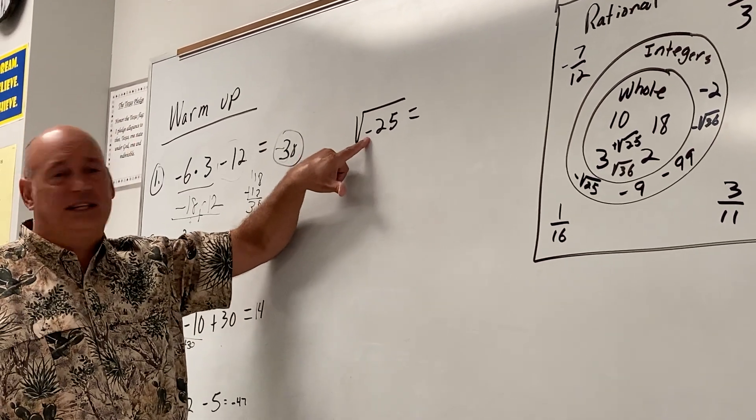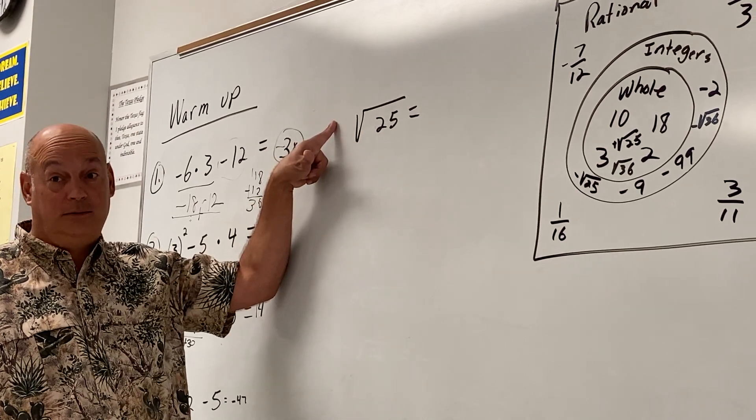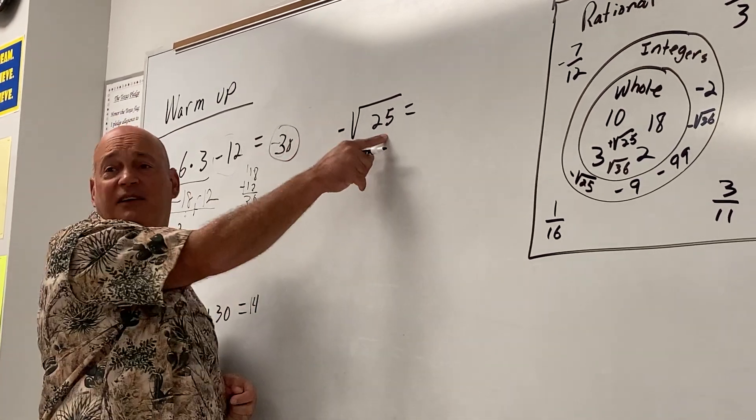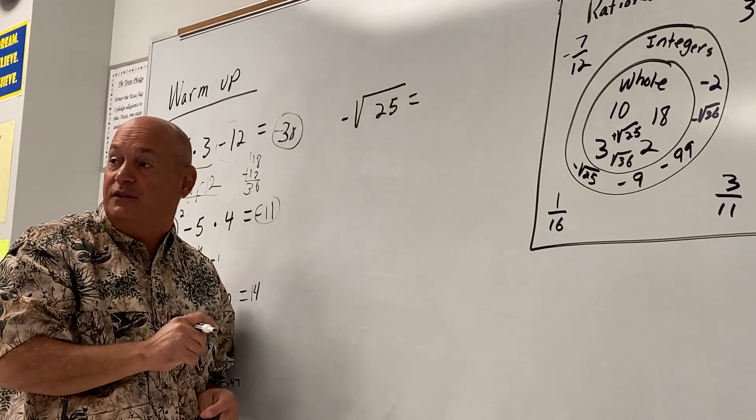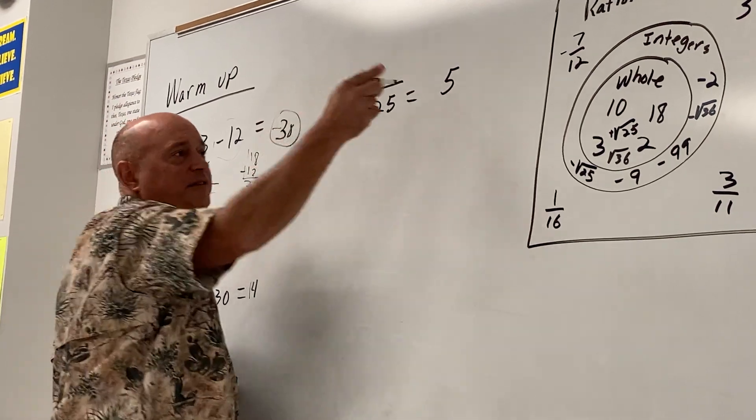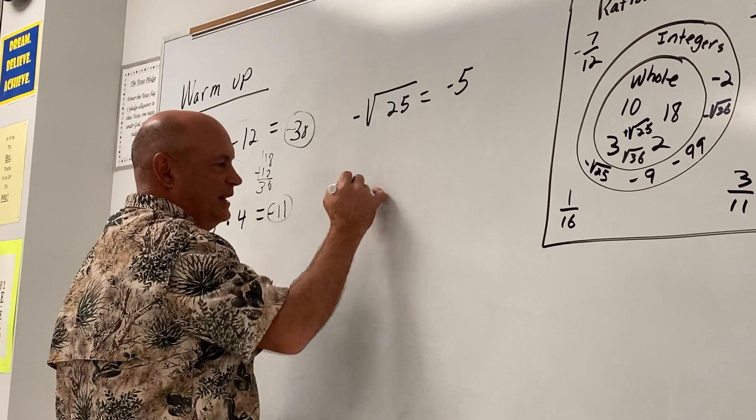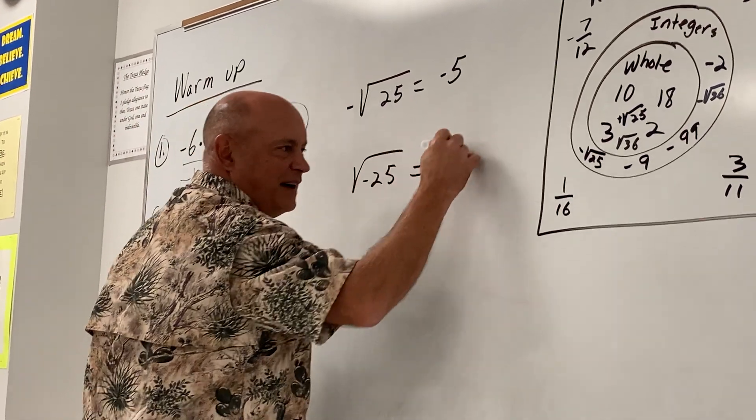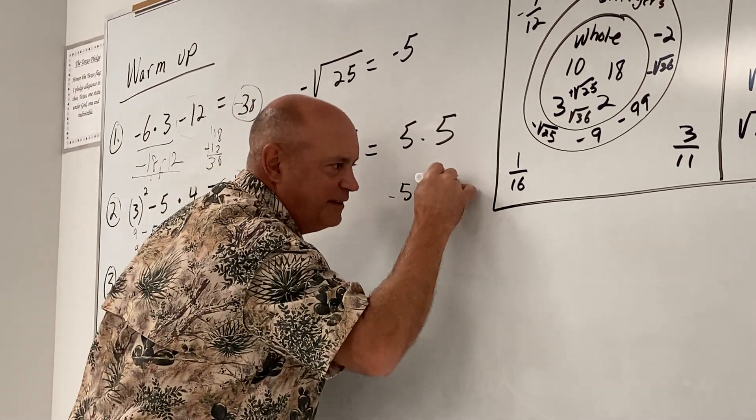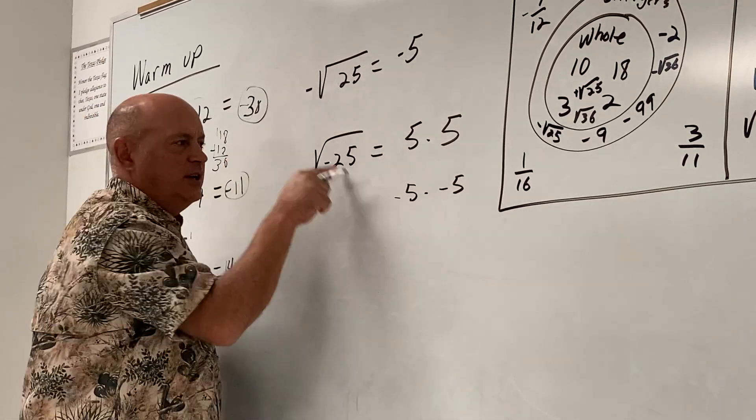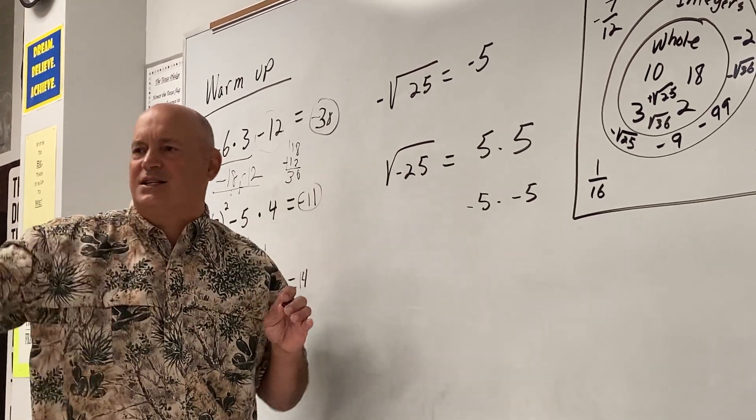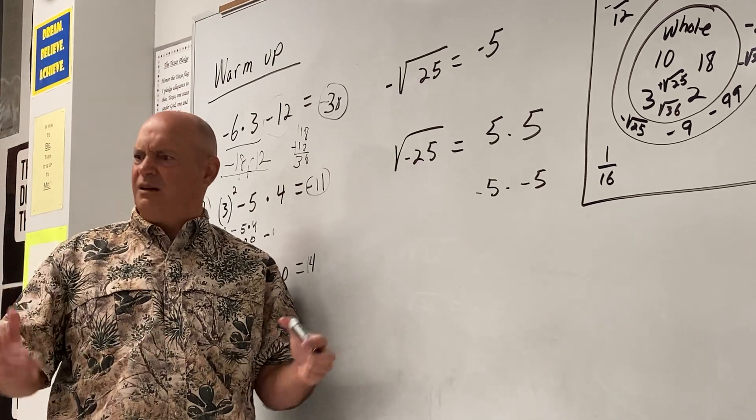You cannot put a negative inside the square root. Now, you can put one outside, though. You got it. Good. You actually helped us discover another rule. We can put a negative out here, because now we can take the square root of 25, which is five. And we can multiply five times this negative. The answer would be negative five. But I cannot put it inside. Five times five is positive. Negative five times negative five is also positive. So, a little rule we just discovered in math. There can never be a negative inside the square root. It is impossible.